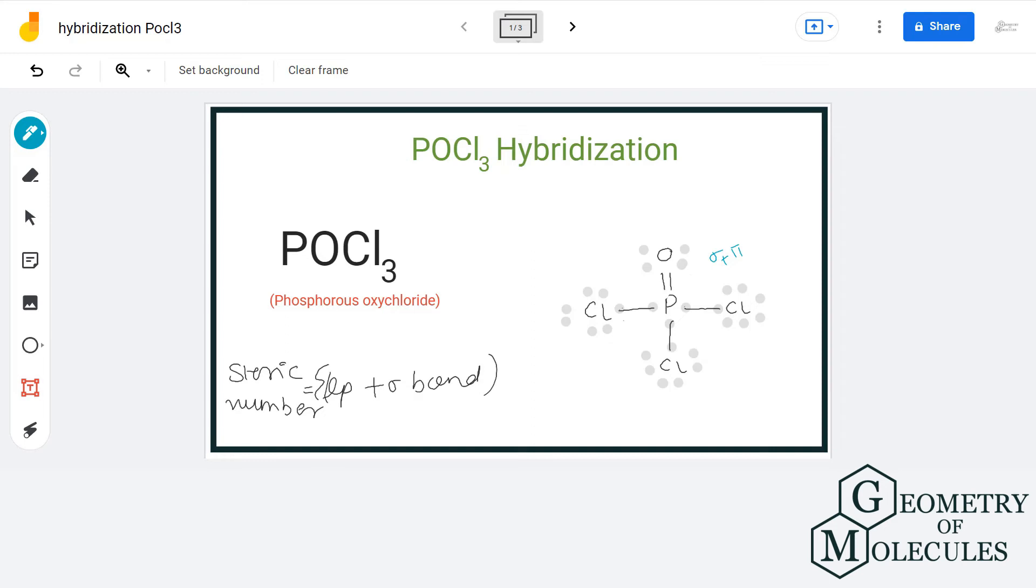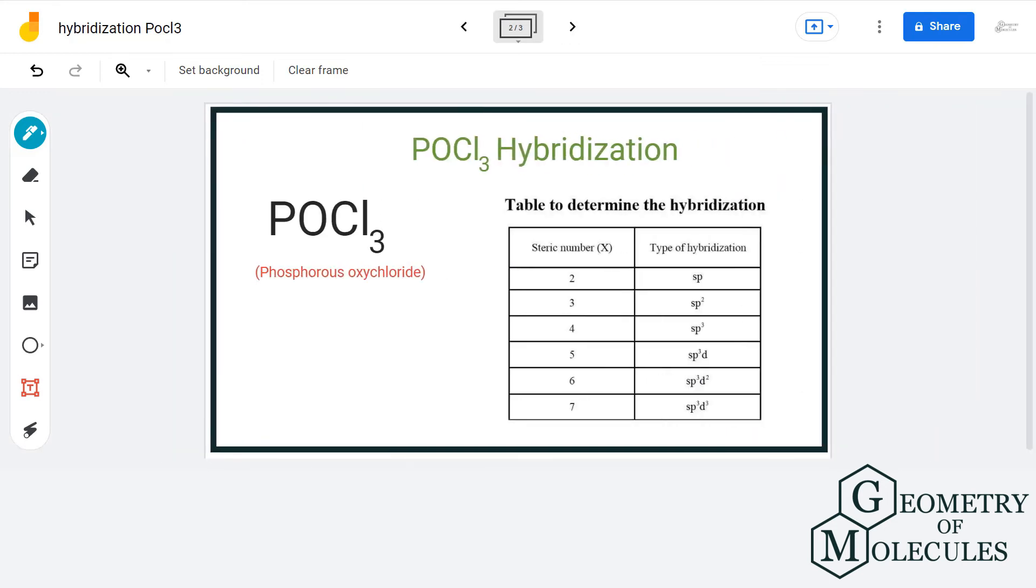Let us add the two. We have four sigma bonds plus zero lone pairs which equals the steric number of four. And as we can see in this table, steric number four corresponds to sp3 hybridization.